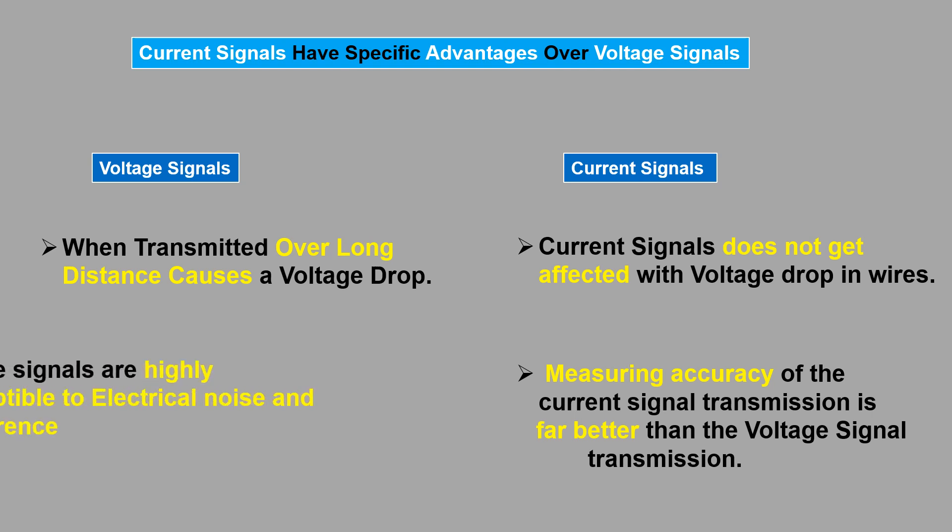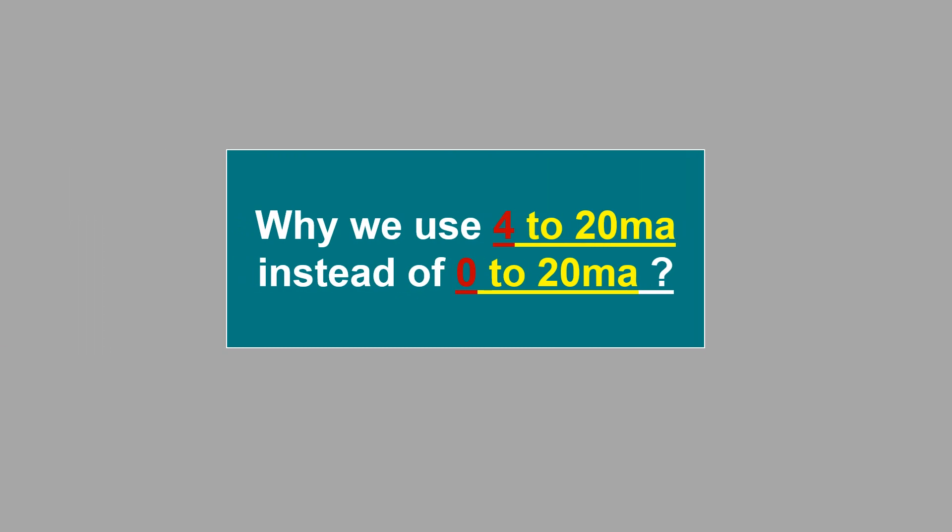Voltage signals are highly susceptible to electrical noise and interference. Now let's discuss why we use 4 to 20 mA instead of 0 to 20 mA.